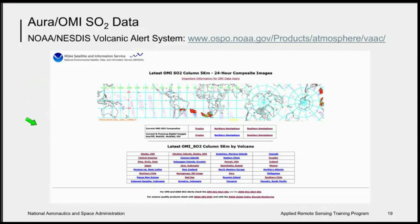The NOAA-NESDIS volcanic alert system also pulls together data from ORA and OMI on sulfur dioxide gas in the atmosphere. While sulfur dioxide gas is not a particular threat, it is indicative of the location of the ash threat, so tracking it is important as well. This data has been hosted on the Washington VAC site since 2010 and is operationally available to aviation warning systems around the world.